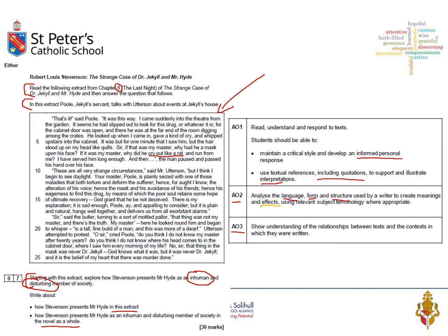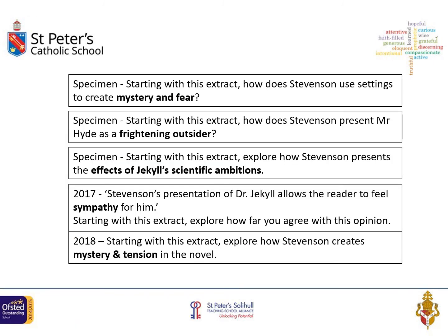AO3 is context — understanding the big ideas of the text. What is Stevenson saying about Victorian society? What lessons should we learn? You might also think about how different audiences respond differently: a Victorian audience might read this very differently from a modern audience. Both of those different approaches and interpretations are really important.